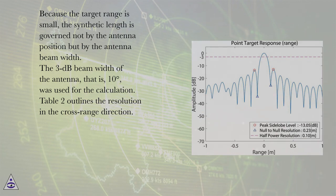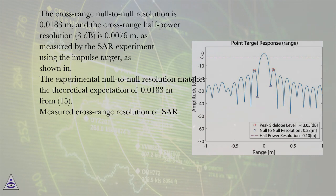Table 2 outlines the resolution in the cross range direction. The cross range null-to-null resolution is 0.0183 meters, and the cross range half power resolution (3 dB) is 0.0076 meters, as measured by the SAR experiment using the impulse target.